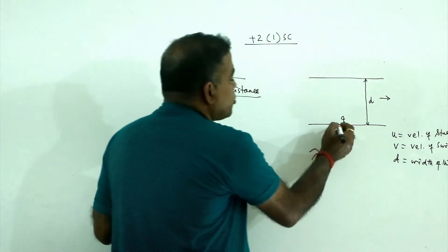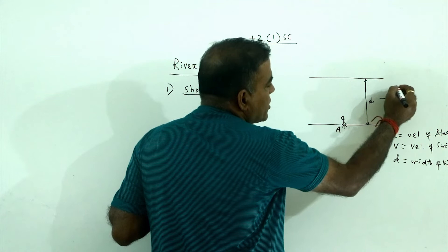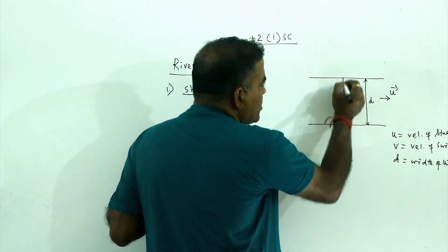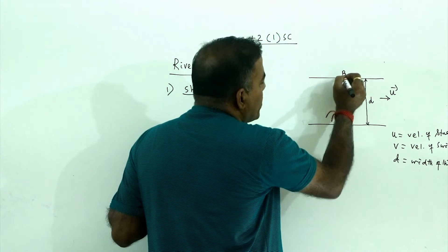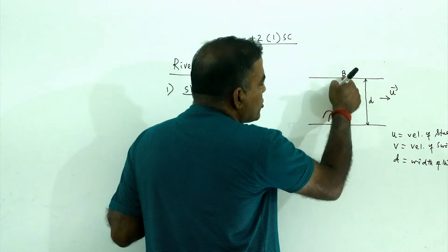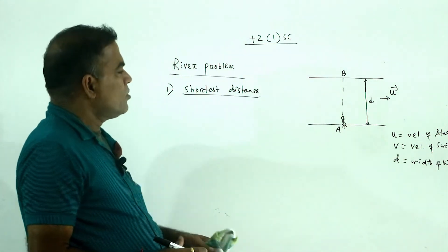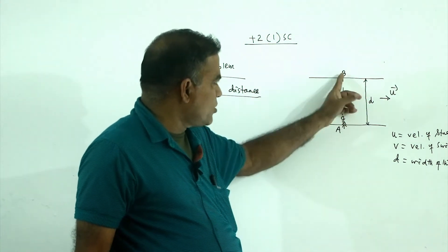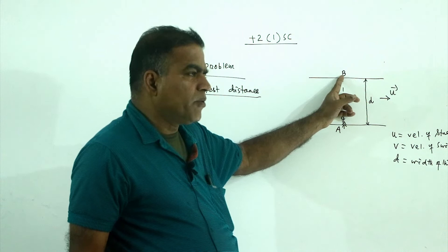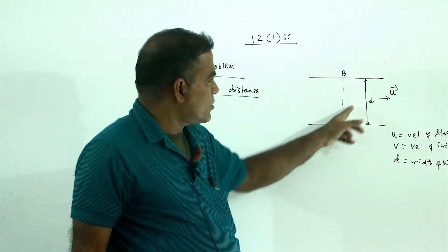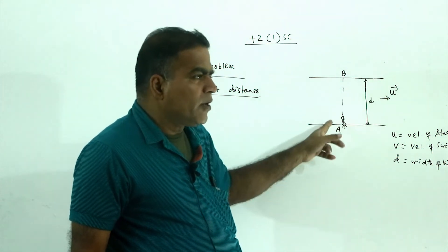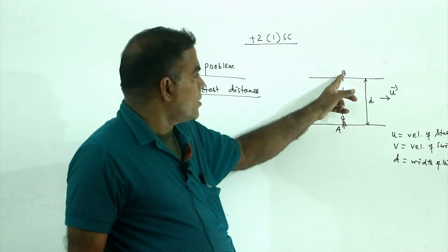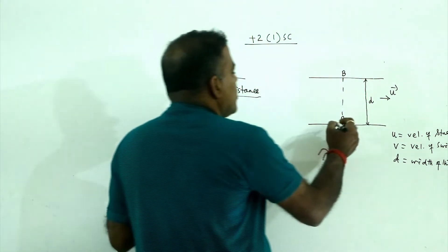The swimmer starts at point A. The u velocity is the stream. If the swimmer wants to go straight across, they will reach point B on the opposite bank — that is the shortest distance across the river.